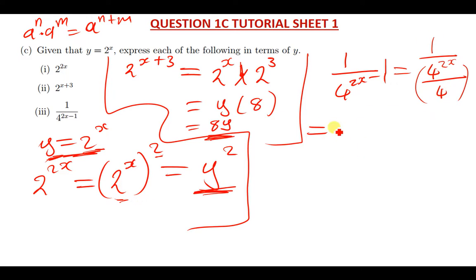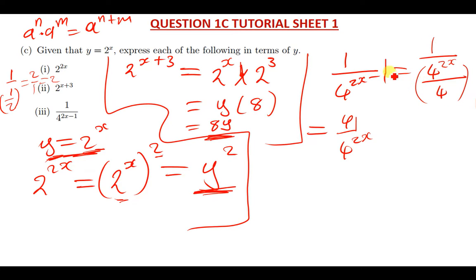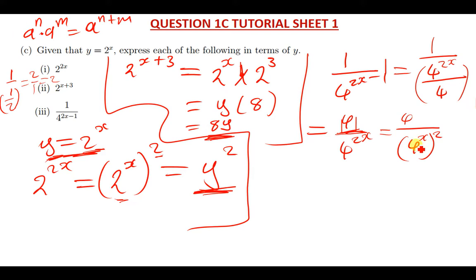If I'm dividing by that, I can write it as 4 over 4 to the power 2x. Now, 4 to the power 2x can also be separated — we can write it as 4 to the power x, then everything squared. So we have 4 divided by 4 to the power x, all squared.